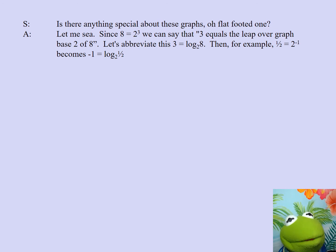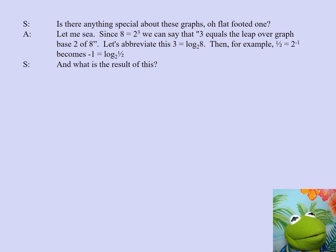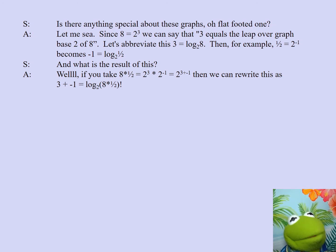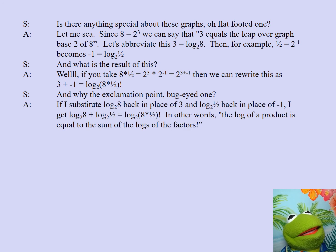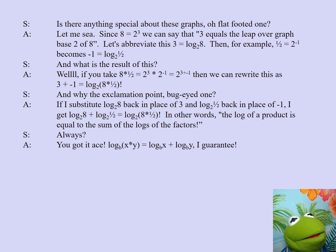Let me see. Since 8 equals 2 to the third, we can say 3 equals the leap over graph base 2 of 8. Let's abbreviate this. 3 equals log base 2 of 8. Then, for example, 1 half equals 2 to the negative first because negative 1 equals log base 2 of a half. And what is the result of this? Well, if you take 8 times a half equals 2 to the third times 2 to the negative first equals 2 to the 3 plus negative 1 power. Then, we can rewrite this as 3 plus negative 1 equals log base 2 of 8 times a half. And why the exclamation point bug-eyed one? If I substitute log base 2 back in place of 3 and log base 2 of a half back in place of negative 1, I get log base 2 of 8 plus log base 2 of a half equals log base 2 of 8 times a half. In other words, the log of the product is equal to the sum of the logs of the factors. Always? You got it, Ace! Log base B of x times y equals log base B of x plus log base B of y. I guarantee!